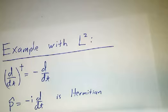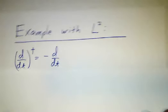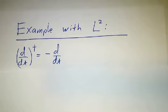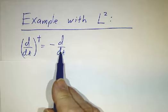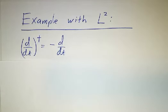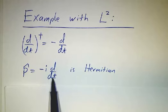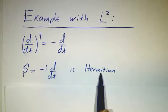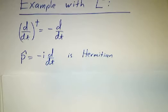To close off, we're going to look at an example in an infinite dimensional space. Space L2, space of functions. We previously worked out that the conjugate of the derivative operator was minus the derivative operator. So if you take minus i times the derivative operator, that's Hermitian, and we're going to call it p-hat. It's related to the momentum operator in quantum mechanics.